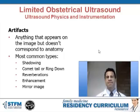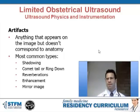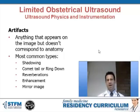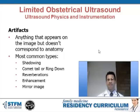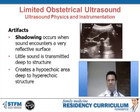Artifacts are anything that appear in the image that do not have corresponding anatomy in the tissue being examined. The most common types we'll discuss are shadowing, comet tail or ring down, reverberations, enhancement, and mirror image.